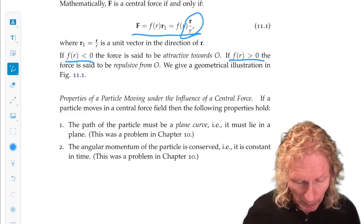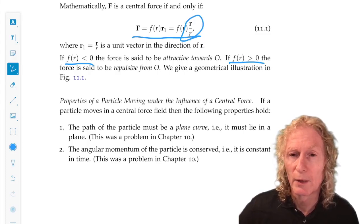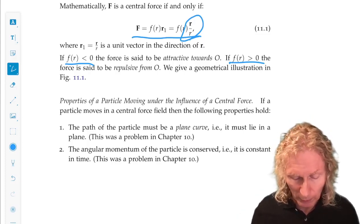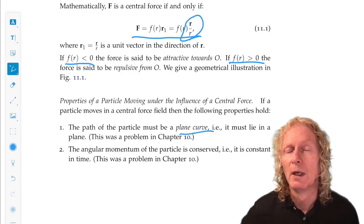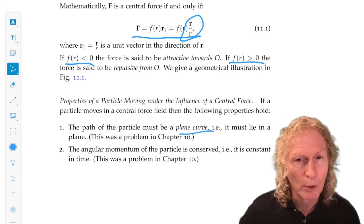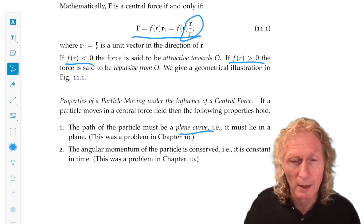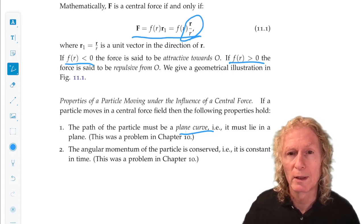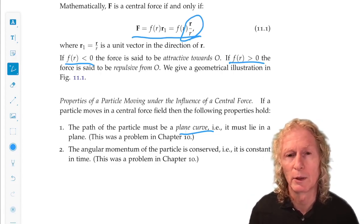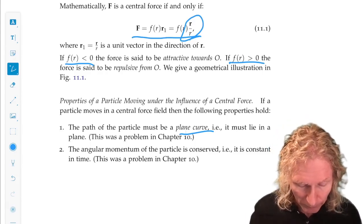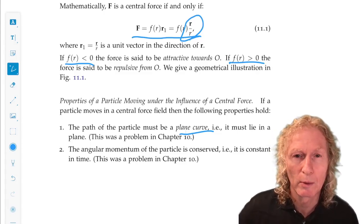Now, the particle moving under a central force has three interesting properties. The path of the particle must be a plane curve, meaning the particle moves in a plane. There's a fixed plane, and we're going to consider that to be the XY plane in the coordinates I just described. We proved that—it was one of the final problems in the previous chapter.